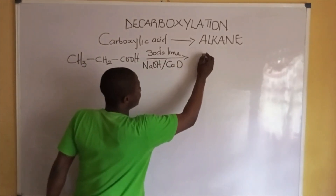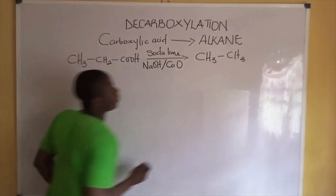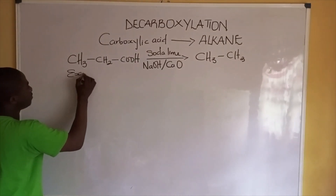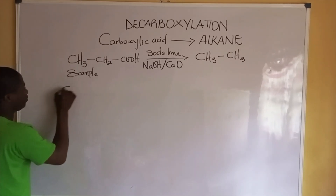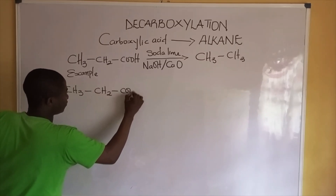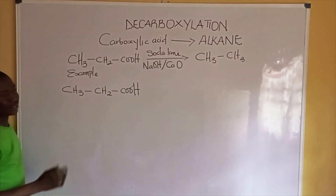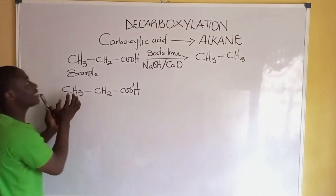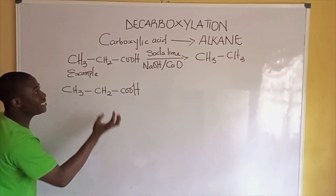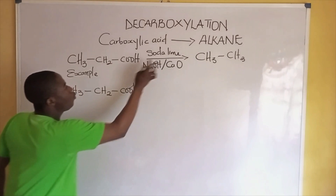Let's take example one. This is propanoic acid, and soda lime is the reagent we react the carboxylic acid with. Decarboxylation works by removing the carboxyl group. We react the carboxylic acid with caustic soda, also called sodium hydroxide.